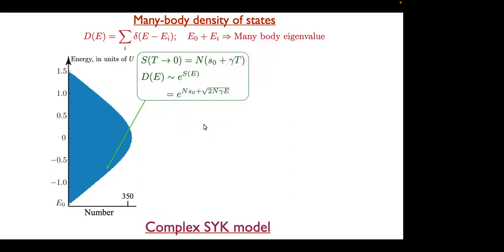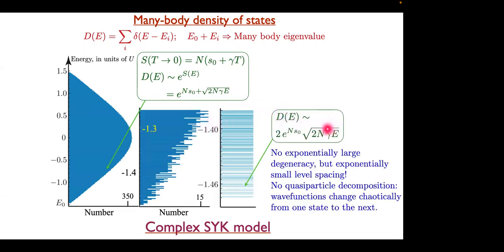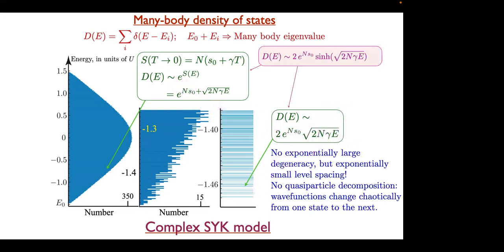Even a Fermi liquid would have the square root of E term — a Fermi liquid wouldn't have the S₀, but it would have the same square root of E. However, at very low energies, the formula says the e^{N·S₀} term survives. And we also know that at very low energies we essentially have a random matrix, and every random matrix has a square root edge in the density of states. There is indeed a square root of E edge, and now you have to interpolate between these regimes. The sinh is the simplest function that interpolates between e to the square root of E and square root of E — and that turns out to be the exact answer.